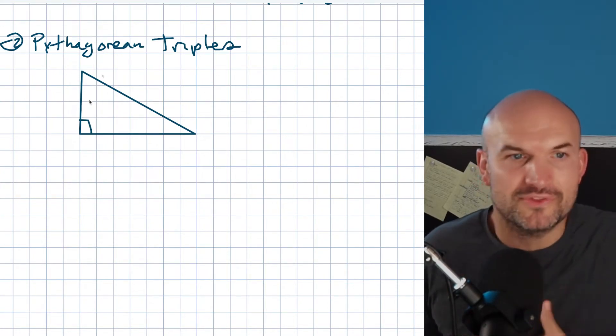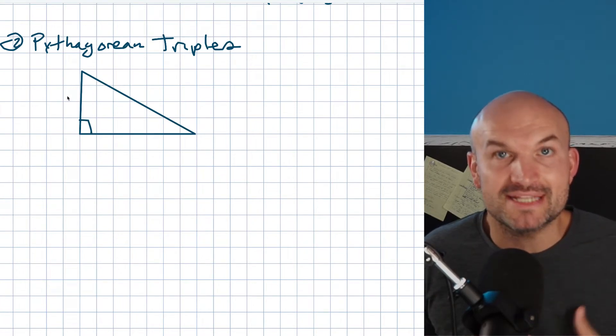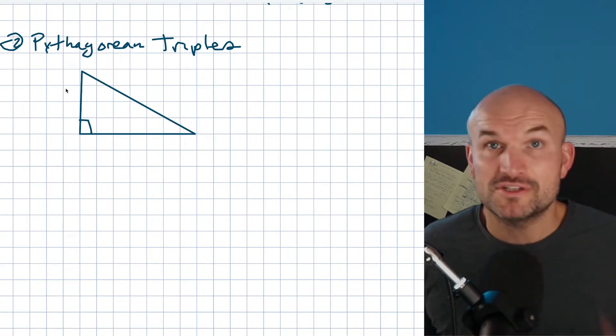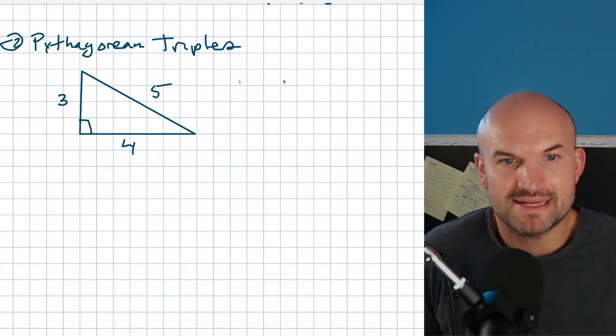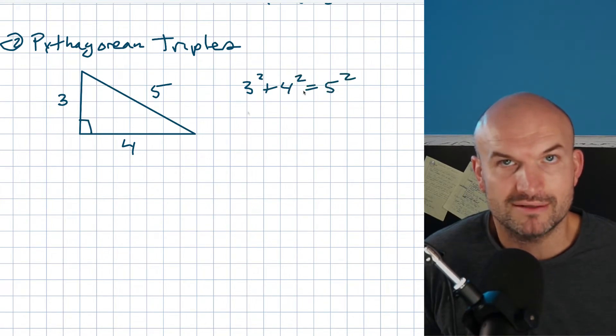One of the really cool things about the Pythagorean theorem is sometimes all the sides are going to be integers. The most famous Pythagorean triple is the 3-4-5 triangle. This makes sense: 3 squared plus 4 squared equals 5 squared. Let's work it out: 9 plus 16 equals 25, and 9 plus 16 is 25, so 25 equals 25.